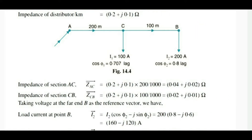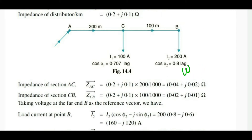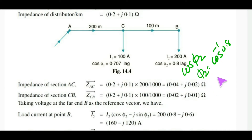Taking the voltage at the far end B as the reference vector. Load current I2 at B is expressed as: I2 = I2(cosφ2 − jsinφ2), where cosφ2 = cos⁻¹(0.8) since the power factor is 0.8 lagging.